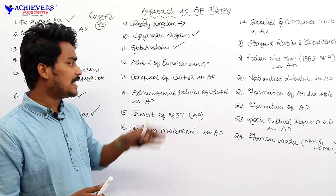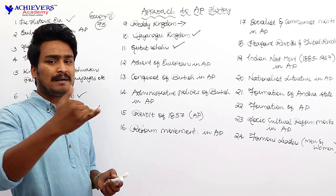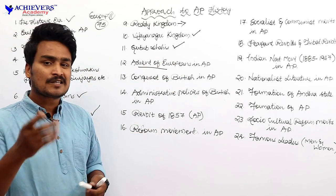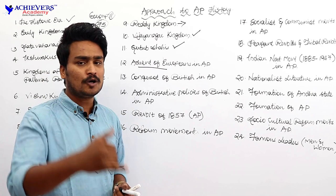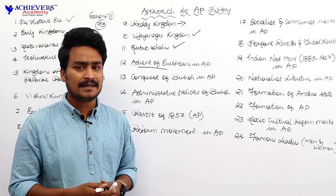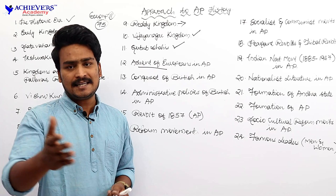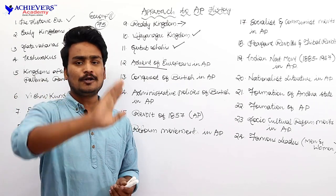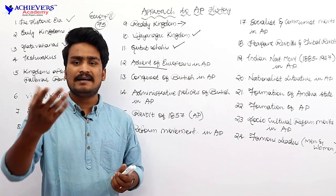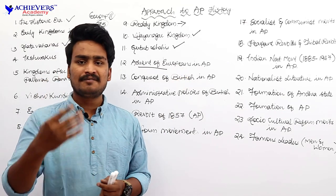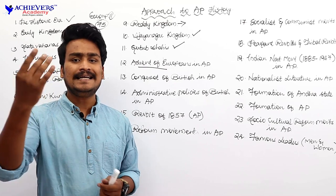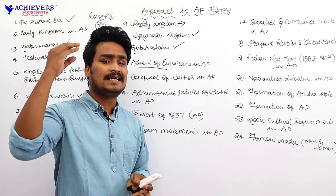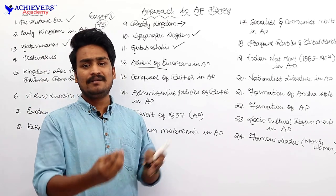After the decline of Kutub Shahis, there came another trend — the entry of Europeans into Andhra Pradesh. Except Danish people (people from Denmark), all other European powers came into Andhra Pradesh — British, French, Portuguese, and Dutch. We need to know where each of them established their trading stations and what were the main items they traded.